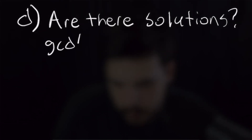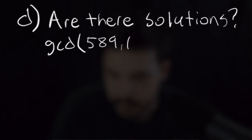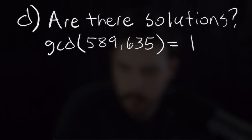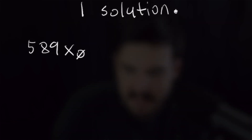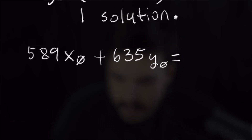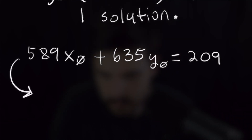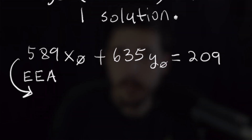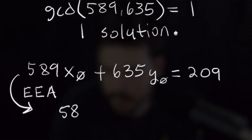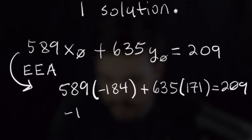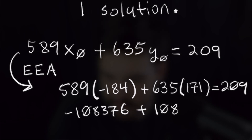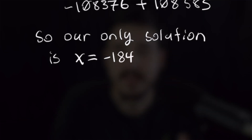For part d, we solve 589x ≡ 209 mod 635. We compute gcd(589, 635) = 1, and since 1 divides 209 there is exactly one solution. Using the extended Euclidean algorithm, we find x₀ = −184 and y₀ = 171, verifying that 589(−184) + 635(171) = −108376 + 108585 = 209. So our only solution is x = −184.